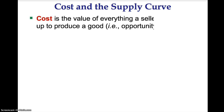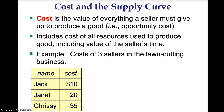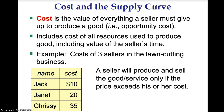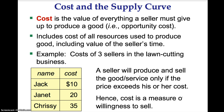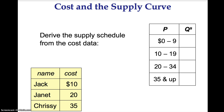Now let's discuss producer surplus. Cost is the value of everything a seller must give up to produce a good — in other words, it is the opportunity cost. Cost includes the cost of all resources. The seller's cost is $10, Janet's cost is $20, and Christy's cost is $35. A seller will produce and sell the good or service only if the price exceeds his or her cost. Hence, cost is a measure of willingness to sell. We can derive the supply schedule from the cost data. When price is between $0 and $9, quantity supplied is 0. When price is between $10 and $19, quantity supplied is 1. When price is between $20 and $34, quantity supplied is 2. When price is above $35, quantity supplied is 3.